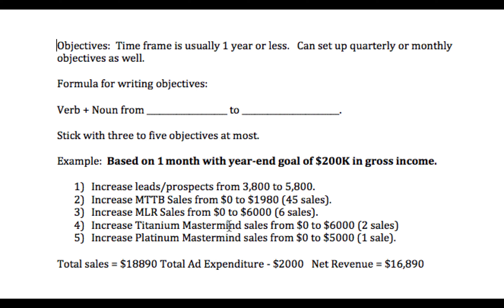Increase titanium mastermind sales from zero to $6,000 — that only takes two sales. And I want to increase my platinum mastermind sales from zero to $5,000, which is one sale. So these are my goals for this month in December, and when I add all of those sales figures up, I get $18,890.